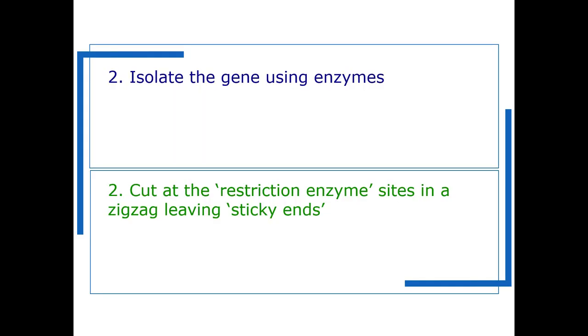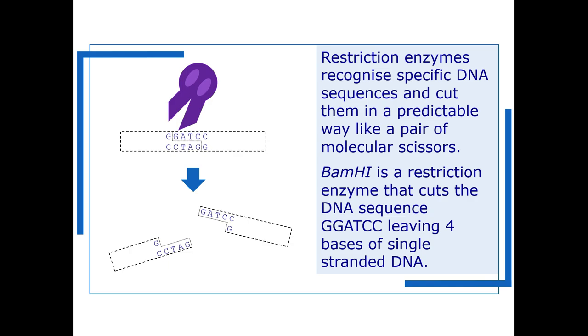So the second step is then to isolate the gene using enzymes. Restriction enzymes recognize specific DNA sequences and cut them in a predictable way like a pair of molecular scissors and here you can see a stretch of DNA and the purple blob is intended to model a restriction enzyme.